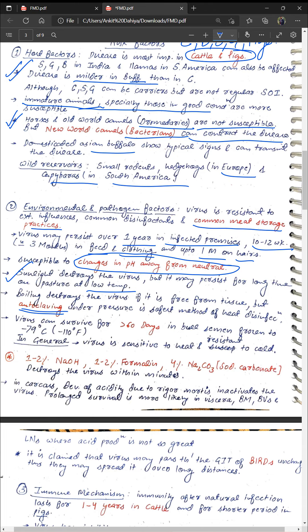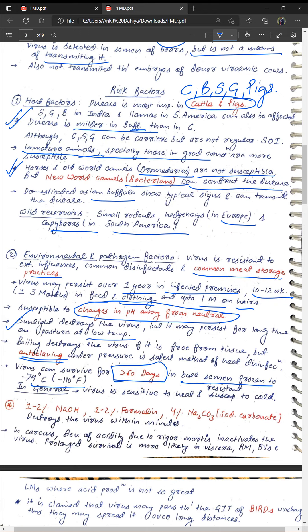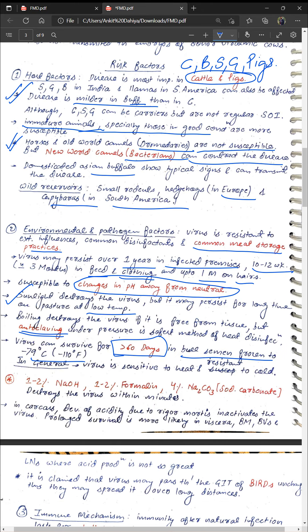The virus can survive more than 60 days in semen frozen at minus 79 degrees Celsius. In general, the virus is sensitive to heat and pH changes but resistant to cold. The disinfectants that can destroy the virus within minutes — often asked in exams — include 1–2% sodium hydroxide, 1–2% formalin, and 4% sodium bicarbonate.